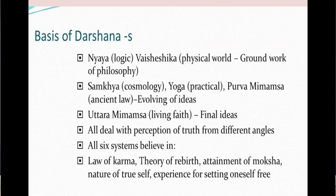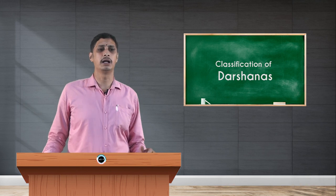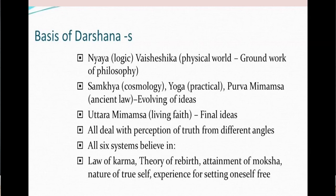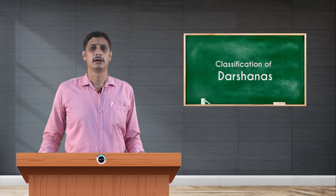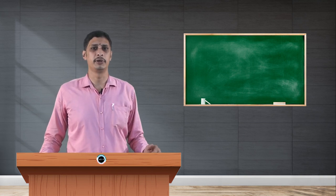All ideas of each philosophy concern the perception of truth from different angles. All systems believe in the law of karma, theory of rebirth, attainment of moksha, the nature of the true self, and the experience of setting oneself free. These six philosophies focus on these six parameters.